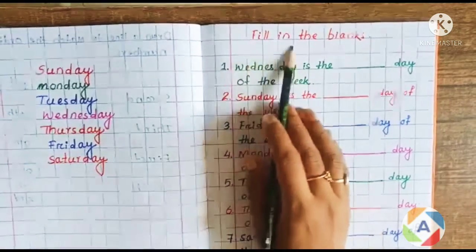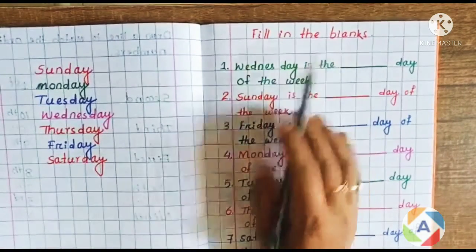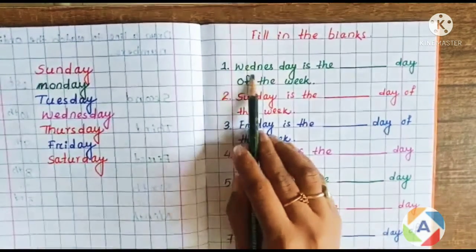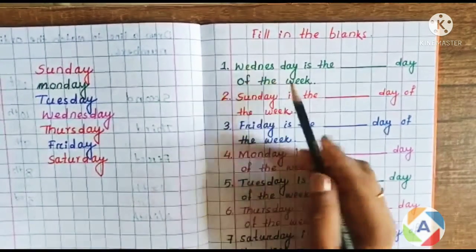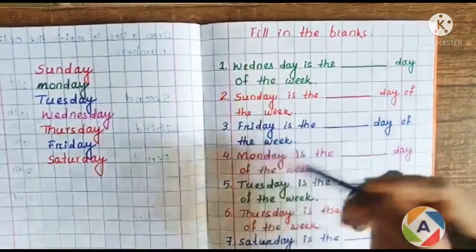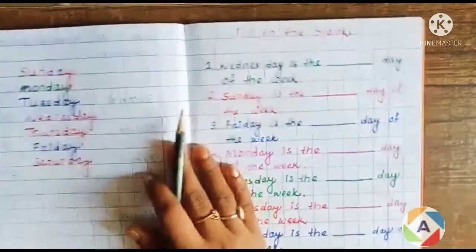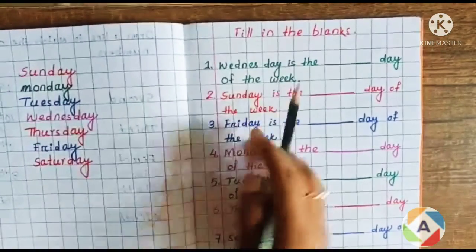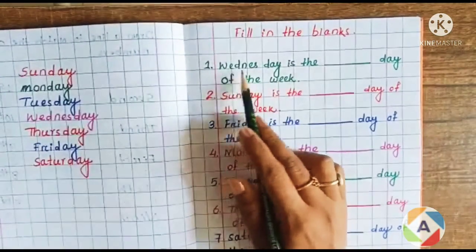Children will read the fill-in-the-blanks worksheet. If a child has not yet learned to read, we can tell the children — they will count and answer: first, second, third, fourth.